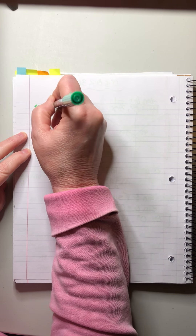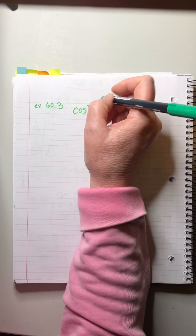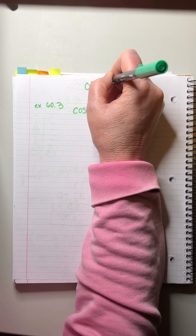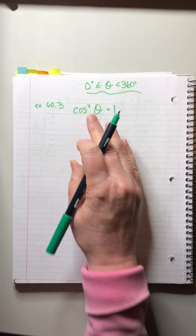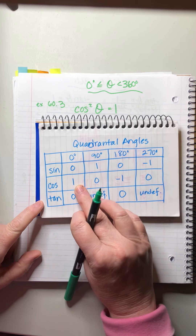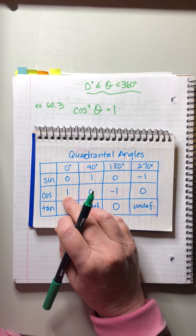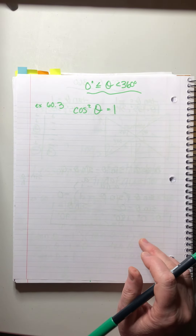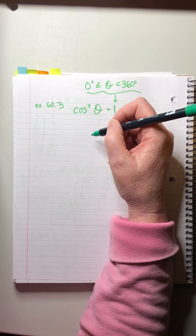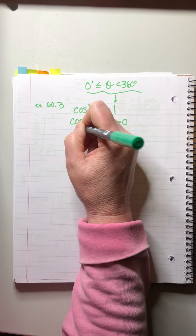Example 60.3: Solve cos²θ = 1, with the same domain limitation 0° ≤ θ < 360°. This might look like a quadrantal angle of cosine = 1, but note this is cosine squared, not plain cosine. We need to rearrange: move the 1 to the other side to get cos²θ - 1 = 0. That gives us the a² - b² difference of squares pattern again.